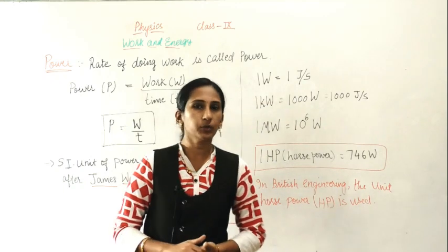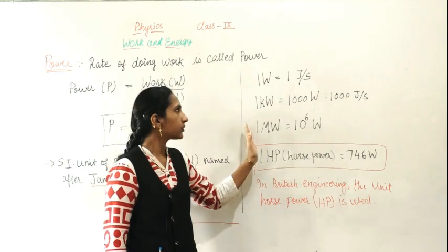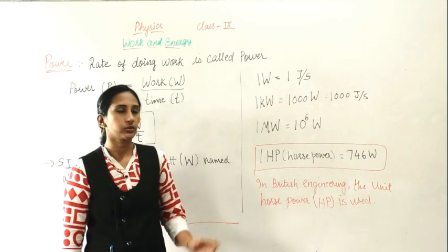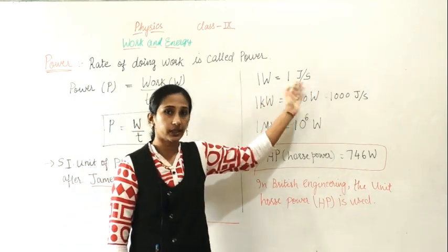So now we are going to study different units. What is 1 Watt? 1 Watt is 1 Joule per second. Actually it is given as 1 Watt, but what it actually is: Joule per second. This is a very important question.